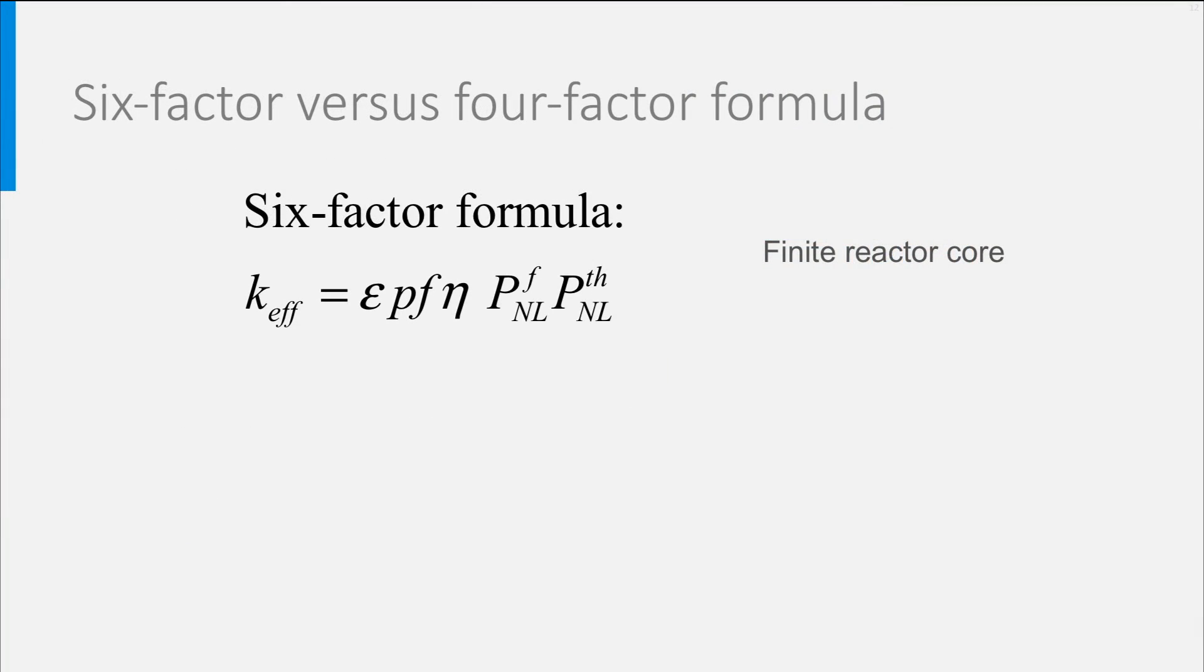If we would have an infinitely large reactor with no spatial leakage, the fast and thermal non-leakage probabilities would both be unity, and we would get the so-called four-factor formula, which gives an expression for the infinite multiplication factor.